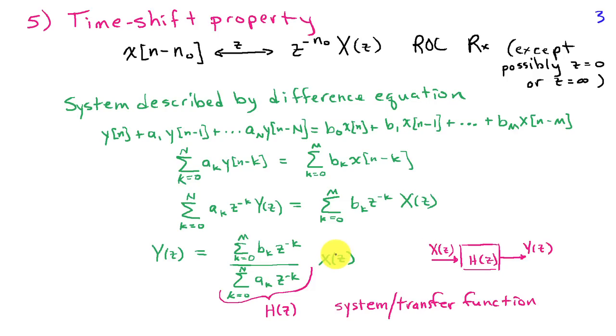For a system described by a difference equation, the Z-transform of the impulse response takes the form of this rational function involving the coefficients b_k and the recursive coefficients a_k. This is one reason why this particular form for a Z-transform is so useful - it represents the system or transfer function for a system described by a difference equation. There are other Z-transform properties besides the five we've discussed here, but these are some of the more important ones that we'll use in signal processing.